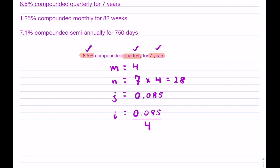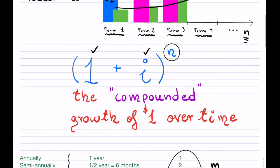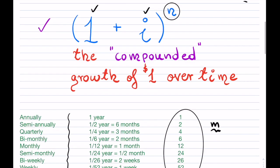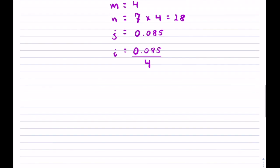Now, once you have this, if I scroll back, then we can use our compounding factor formula to actually see what happens to a dollar over time. So in this case, I have 1 plus, and it's i, well, I have my i right here, 0.085 divided by 4. And then I have to raise it to N, which is right there, which is 28. And that is your compounding factor.